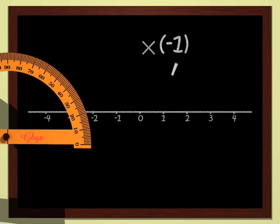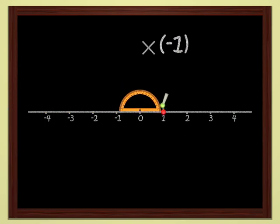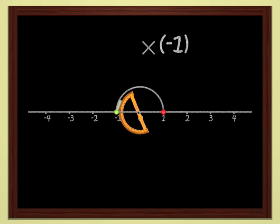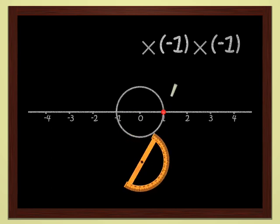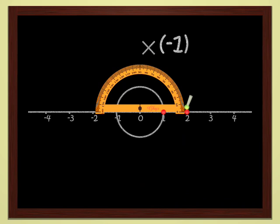Multiplying by minus one is very easy. Each point is sent to the symmetrical point with respect to the origin. In other words, we do a half turn — a rotation by 180 degrees. When we multiply a number by itself, the result is always positive. If we multiply by minus one, we make half a turn, so if we do it one more time, we come back to the initial point. This is why minus one times minus one is equal to plus one. Multiplication by minus one sends two to minus two, and if you multiply one more time by minus one, you come back to two.